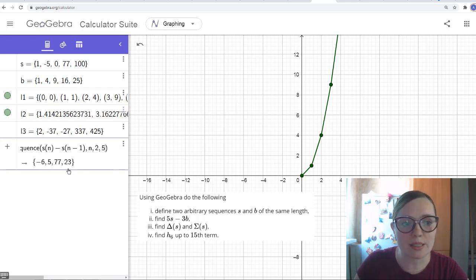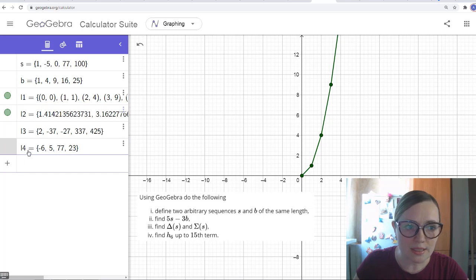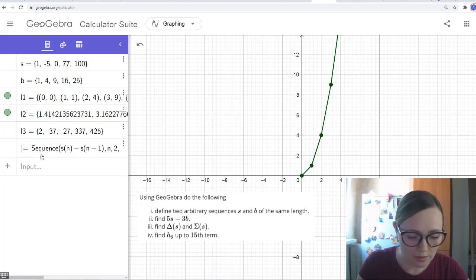So you see the sequence, the difference of the sequence s. And indeed you can check, the first one is -5 minus 1 equals -6. The second one is 0 minus -5, which is 5. This one is 77 minus 0, which is 77. This is 100 minus 77, which is 23. So this is indeed the difference of sequence s. Let me rename it delta s.